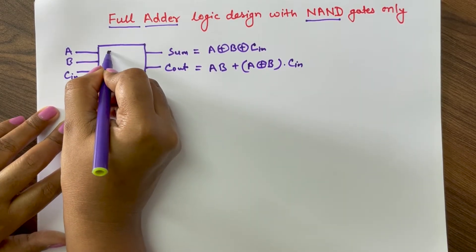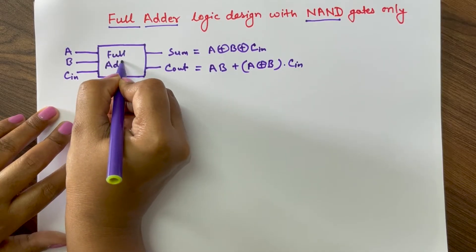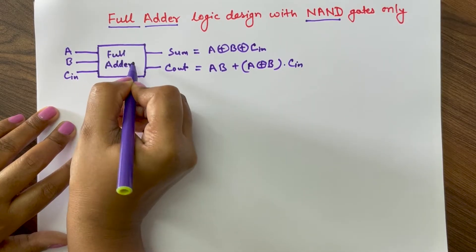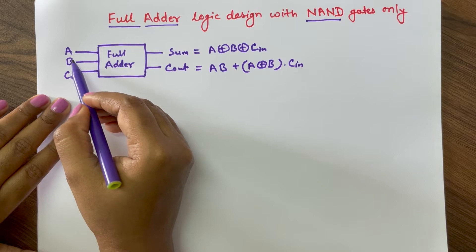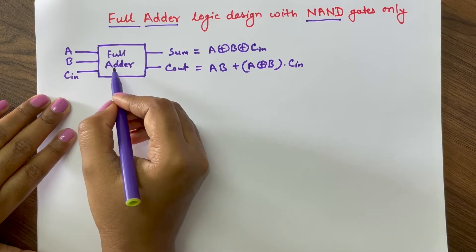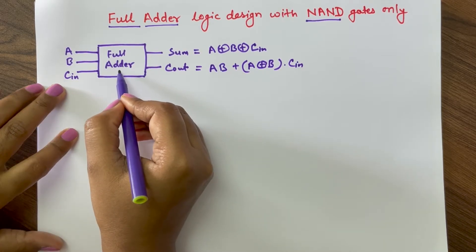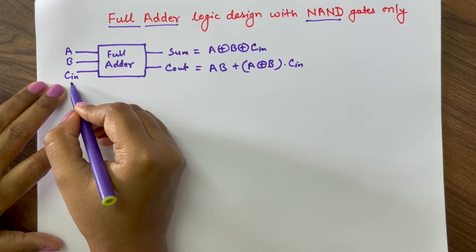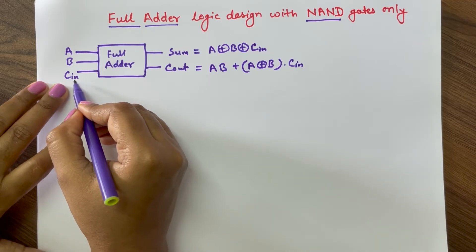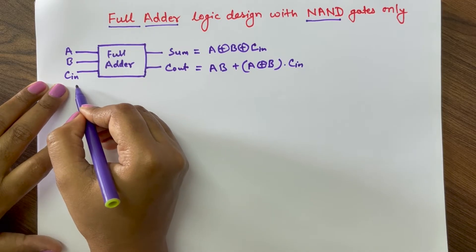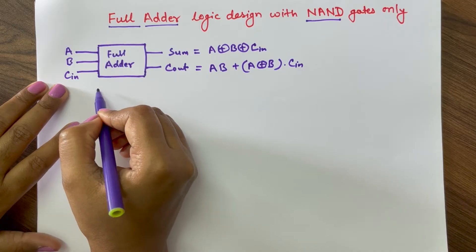This is the full adder. When we add two N-bit numbers using cascaded N number of full adders, then C_in is the carry input and this carry input comes from the carry of the previous sum.